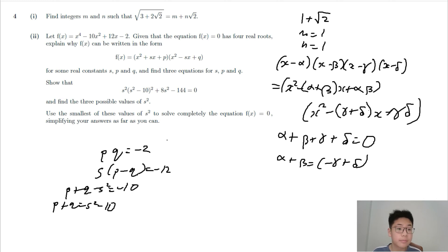And so (p + q)² equals (s² - 10)². And (p - q)² equals (p + q)² - 4pq equals 12 over s².